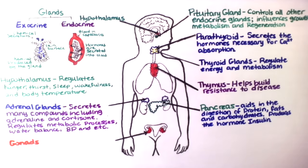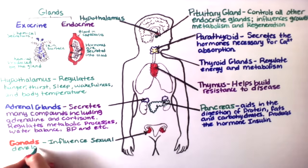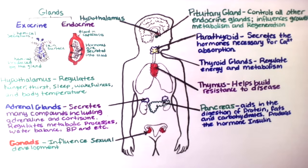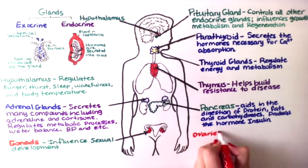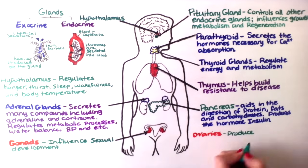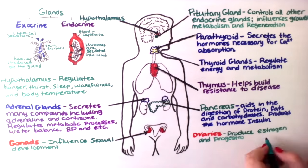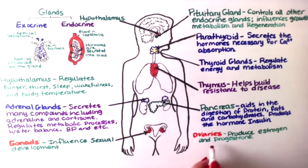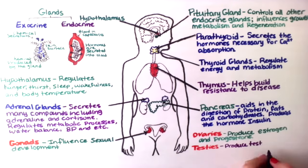The gonads influence sexual development. In females, the ovaries produce estrogen and progesterone. In males, the testes produce testosterone.